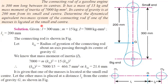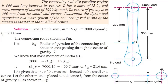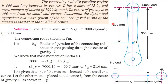Determine the dynamically equivalent mass system of the connecting rod, if one of the masses is located at the small end center and another mass is located at the big end center, at a distance of L1. The distance L1 is clearly given as 200 mm. So now we need to determine the L2 distance and the masses of both the system.